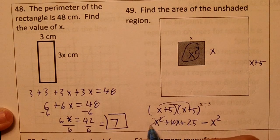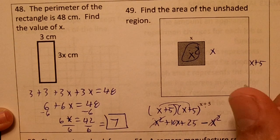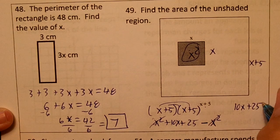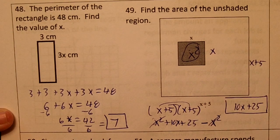What's going to happen to the x squares here? They're going to cancel out. So the area would be just 10x plus 25 of the unshaded area.